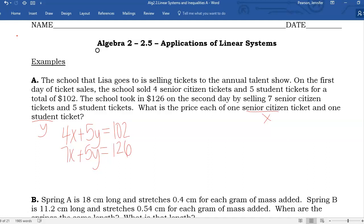This is an example in standard form. So I'm going to use the elimination method from lesson 2.4. I can already see the same coefficient on my Y values. Same tells me to subtract. Four take away seven is negative three. Five Ys eliminate. One oh two, take away 126 is negative 24. Divide both sides by negative three, and that tells me X is eight, which represents the price for a senior ticket. Seniors cost $8.